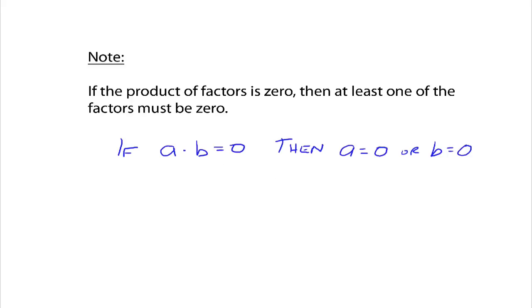If a times b is equal to zero, then a has to equal zero or b could equal zero. Because if a was equal to zero you'd have zero times b, which would still be zero. And if b was equal to zero, then you could have a times zero, which is still equal to zero. So if we know that we've got things multiplied together and that product is equal to zero, then each one of these factors can be equal to zero. And that's going to allow us to actually solve equations.